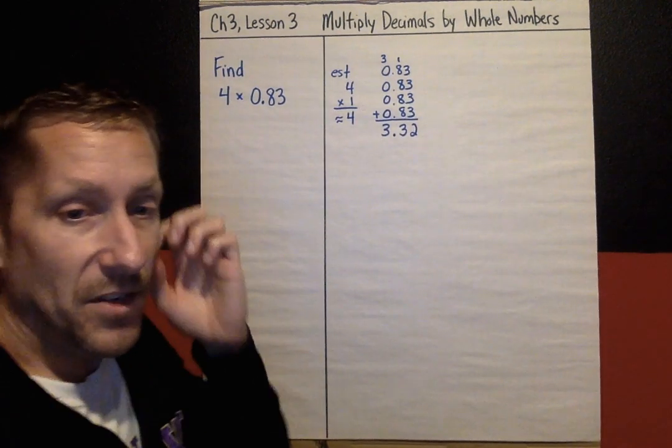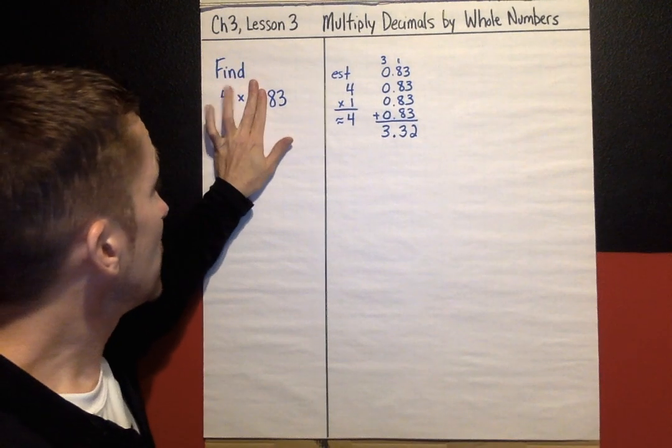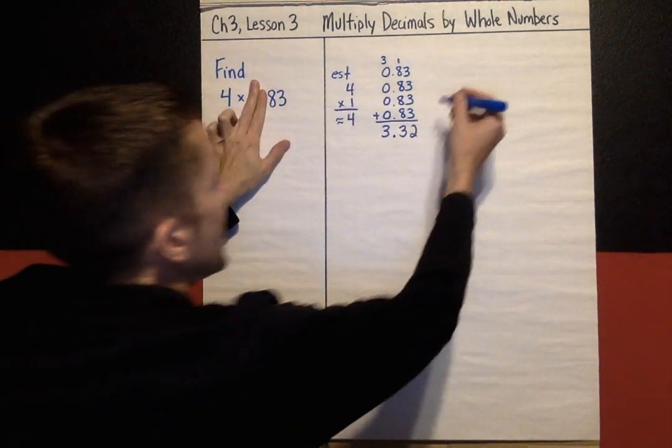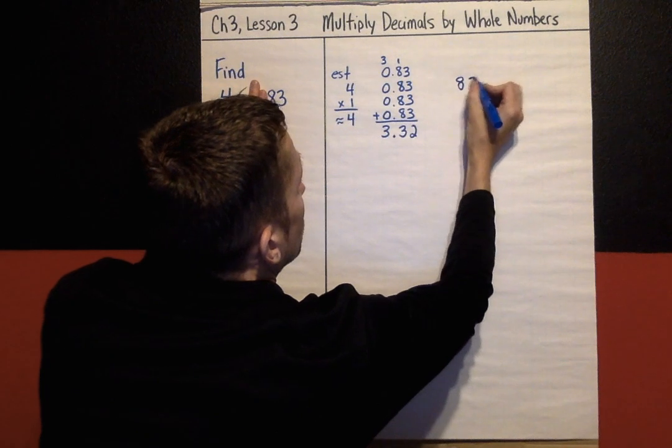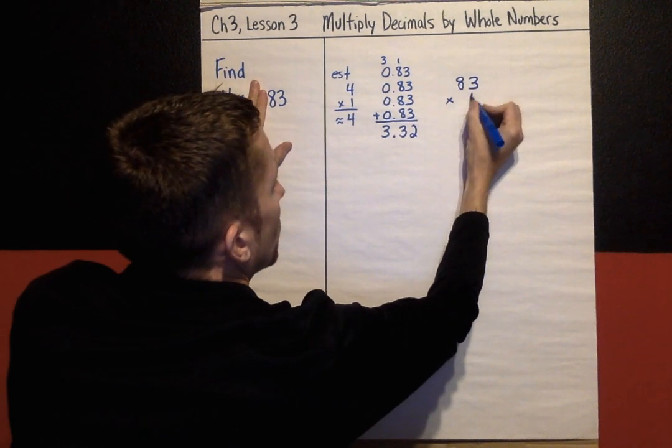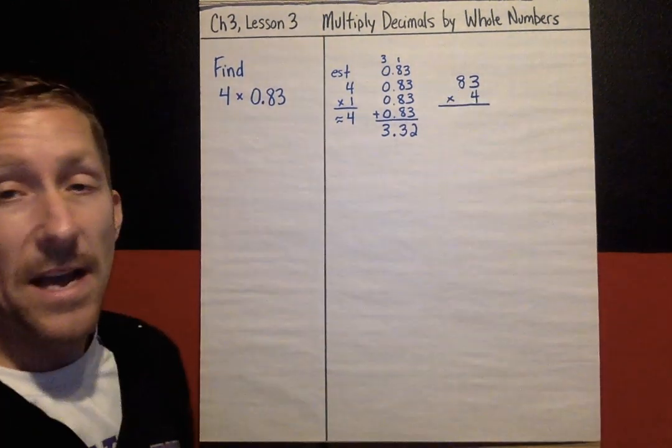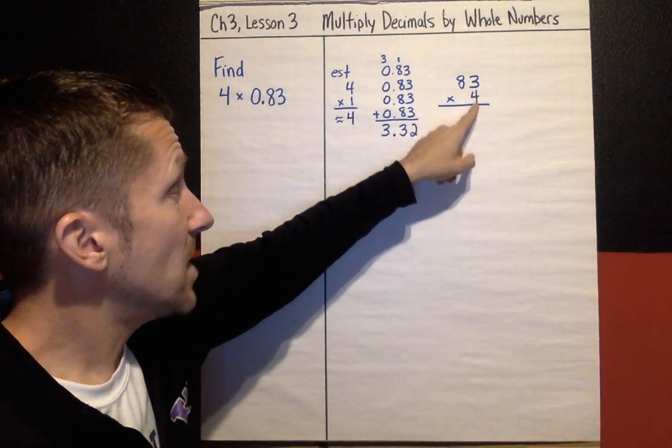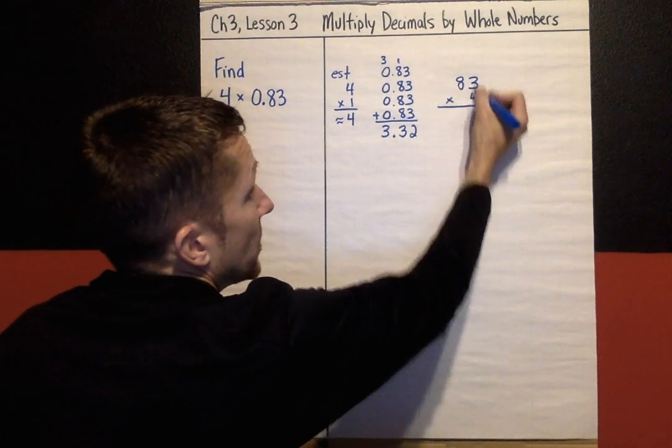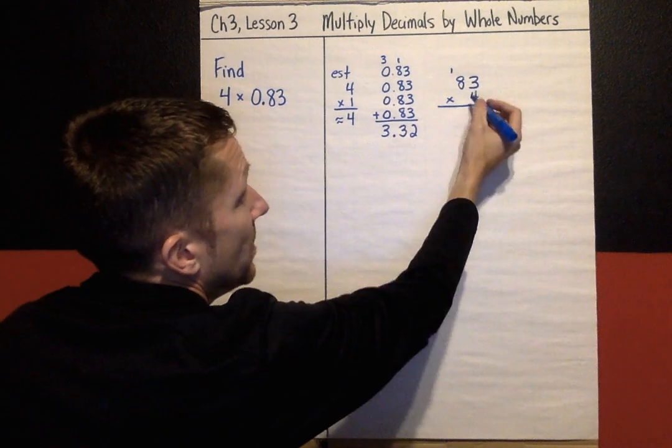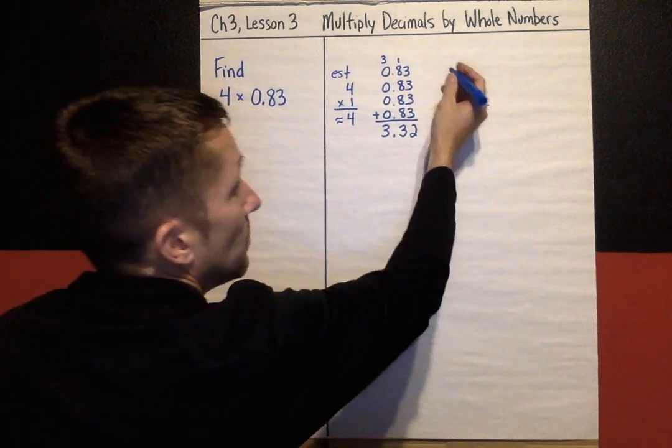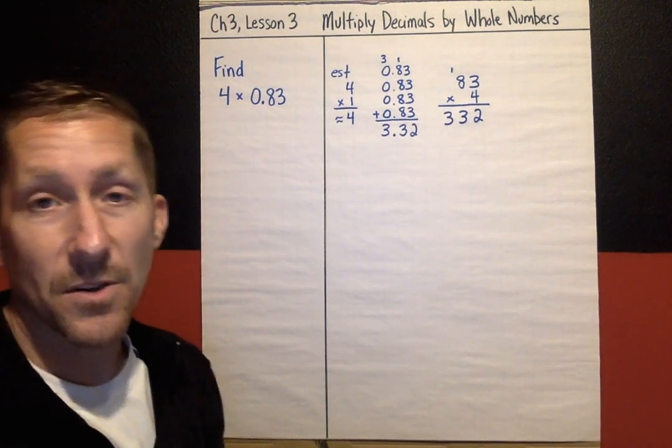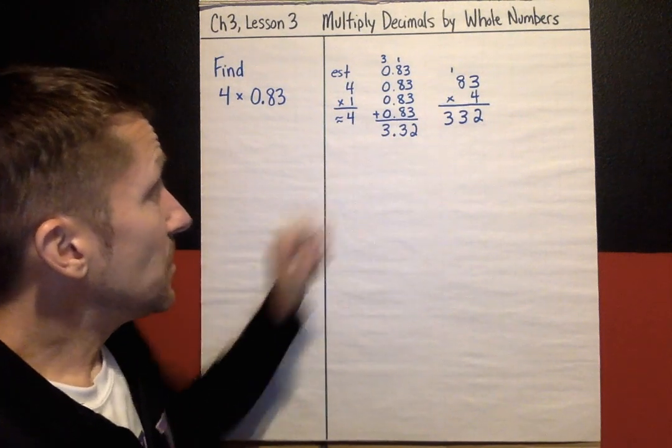And the strategy I'm going to show you is pretend there's no decimal at all. I'm just going to multiply like it's 83 times 4. So the pattern when I'm multiplying here would be 4 times 3 and then 4 times 8. So let's do that. 4 times 3 is 12, I put the 2 here and carry the 1. 4 times 8 is 32, plus 1 makes 33. So my answer is 332.